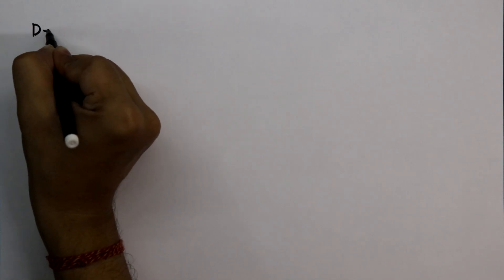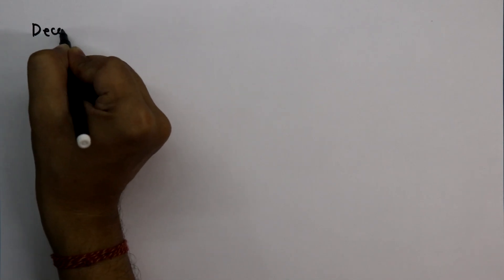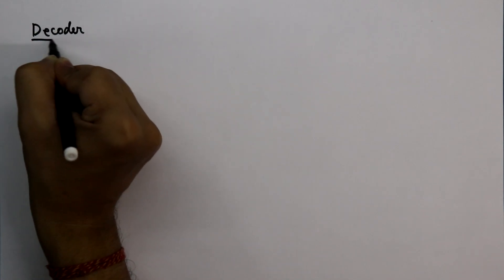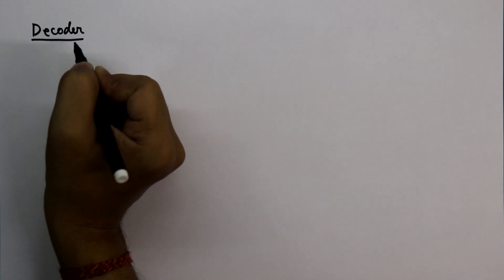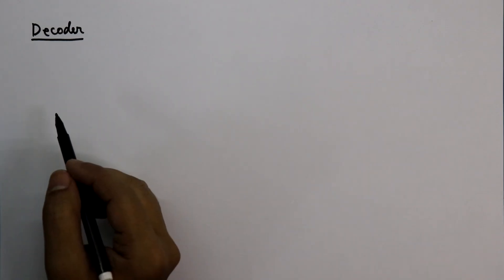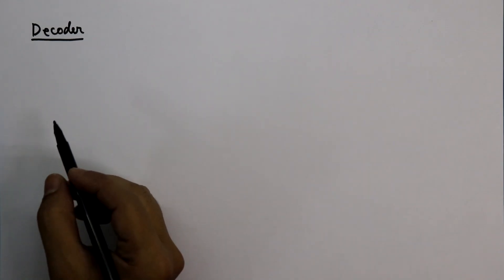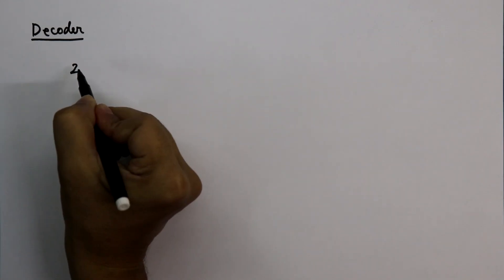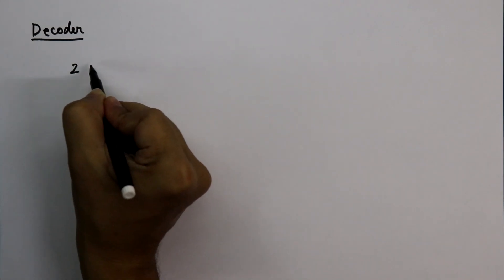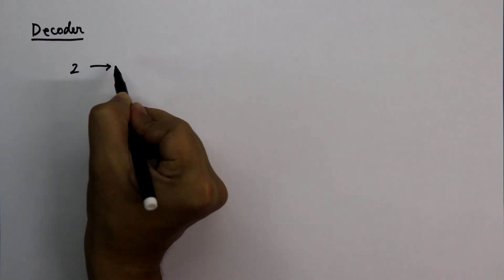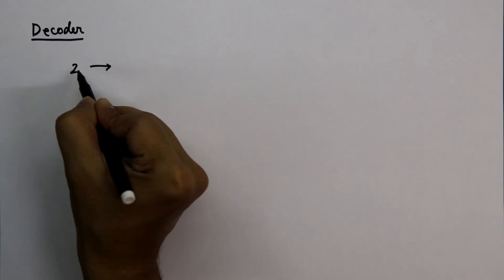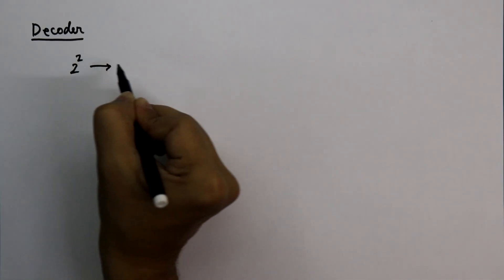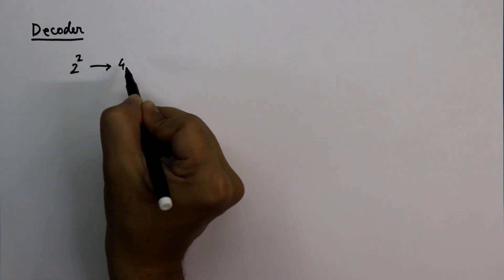Hello guys, welcome to my channel. Today we are going to design a decoder circuit. If you have two binary inputs, then your output will be 2 to the power 2, that is 4.